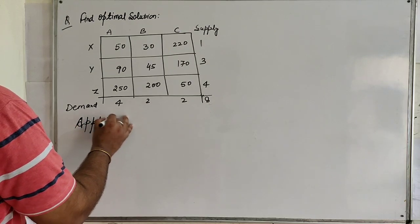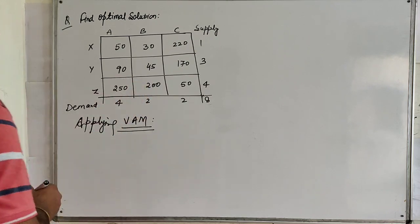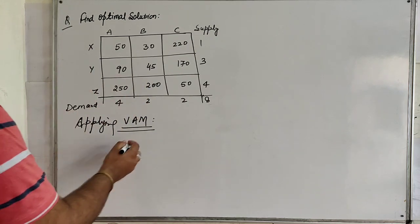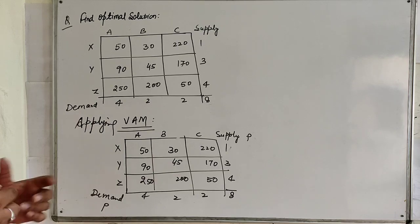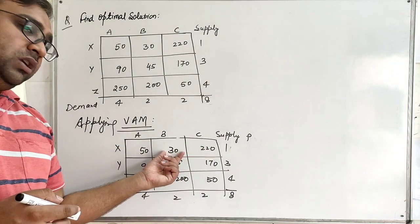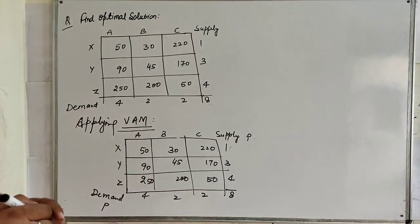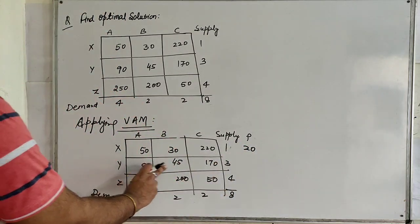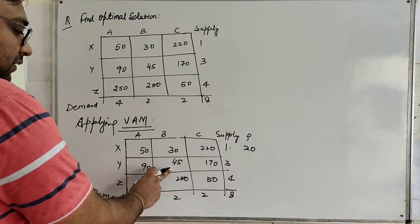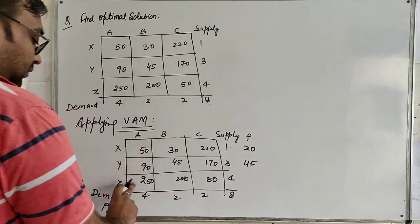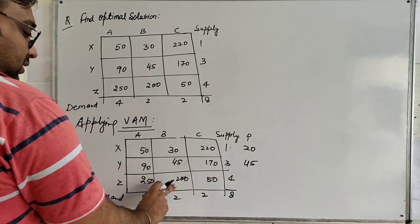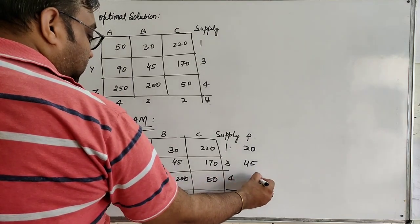Applying the Vogel Approximation method. For this method we have to find the row and column penalties. To find the penalty, we select the lowest and second lowest element; their difference is the penalty. In the first row, the lowest element is 30 and second lowest is 50, so the penalty is 20. In the second row, the lowest is 45 and second lowest is 90, so the penalty is 45. In the third row, the lowest is 50 and second lowest is 200, so the penalty is 150.